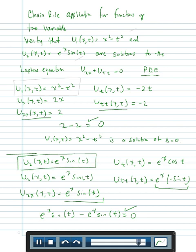We have verified in both cases that u sub 1 of x, t, namely x squared minus t squared, is a solution of Laplace's equation because the sum of the double partials is equal to zero, and that u sub 2 of x, t equals e to the x sine of t is also a solution of Laplace's equation because the sum of the double partials is equal to zero. I hope this helps. Thank you.